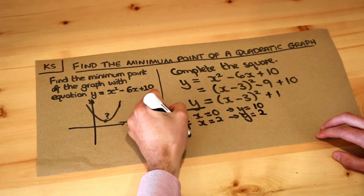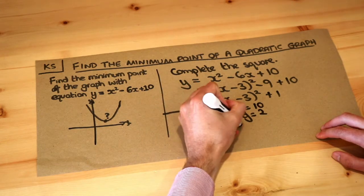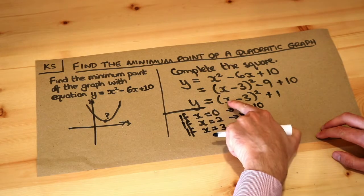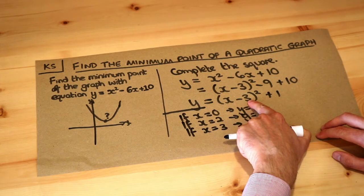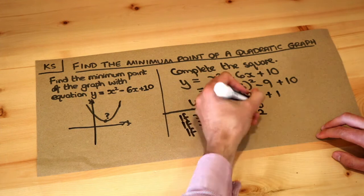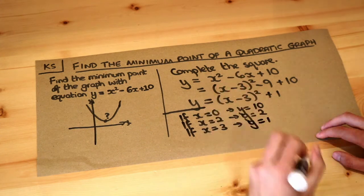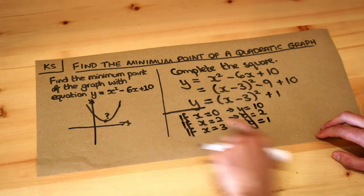But in fact we can do even better. If x was 3, can we make y smaller? Yes we can. 3 minus 3 is 0, 0 squared plus 1 is 1. And in fact that's the smallest value of y you can get. Y is 1.